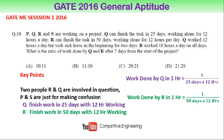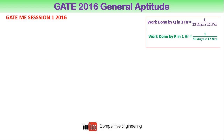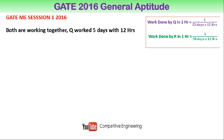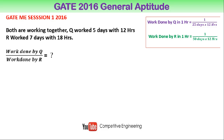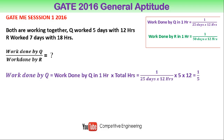Now we are going to solve the problem. Q worked five days with 12 hours because Q took two days of sick leave. We need the ratio of work done by Q divided by work done by R. Work done by Q is 1/(25 × 12) multiplied by total hours: five days × 12 hours per day. After simplification that gives 1/5.